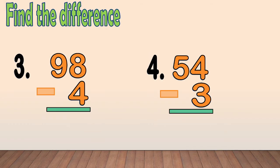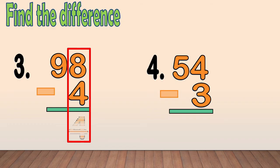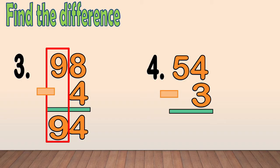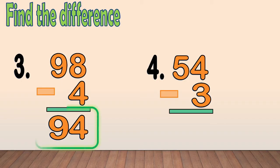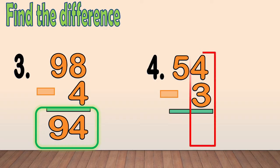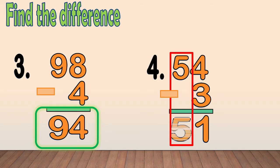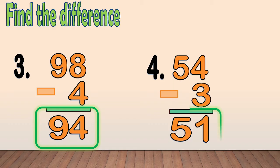Number 3: 98 minus 4. First, subtract the ones column — 8 minus 4 equals 4. Next, we bring down the tens digit 9. 98 minus 4 equals 94. Number 4: 54 minus 3. First, subtract the ones column — 4 minus 3 equals 1. Next, we bring down the tens digit 5. So, the answer is 51.